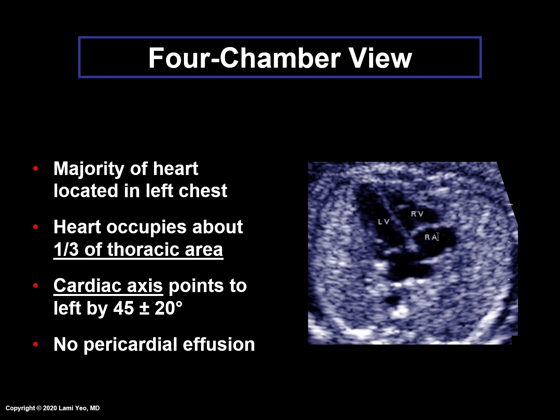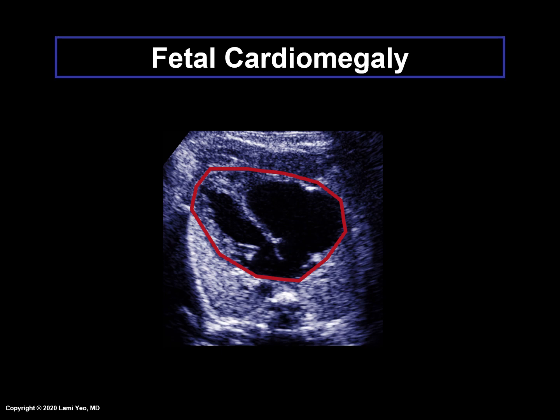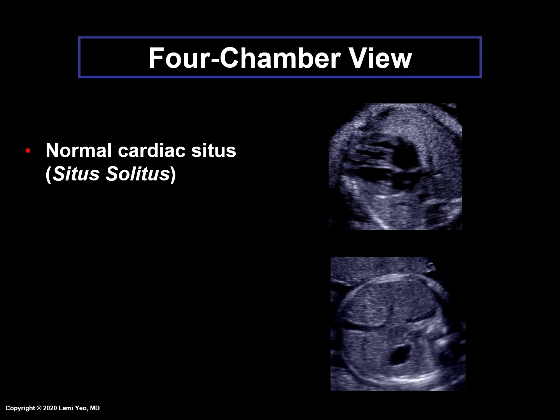Finally, there should be no pericardial effusion. Here is an example of fetal cardiomegaly in which the outline of the heart clearly is larger than each of the lung fields.